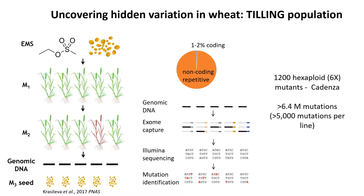We developed an EMS wheat mutant population through the standard protocol. But importantly, we've gone further to identify the mutations in this population by sequencing the genome of each mutant plant. We took advantage of the fact that just 2% of the wheat genome comprises the coding sequence, and used an approach called exome capture to capture and sequence just the coding sequence to identify mutations. About 1,200 hexaploid mutant lines were developed and sequenced in the background of a UK wheat variety called Cadenza, yielding about 6.4 million mutations — approximately 5,000 mutations per mutant line — all within the coding region.